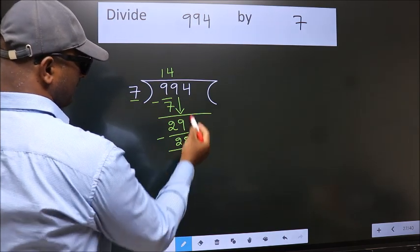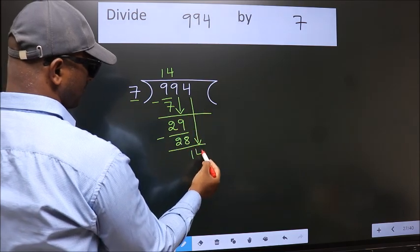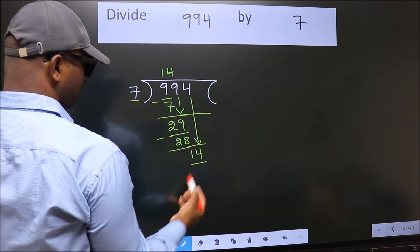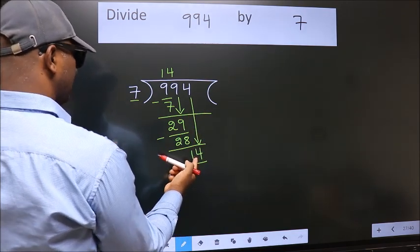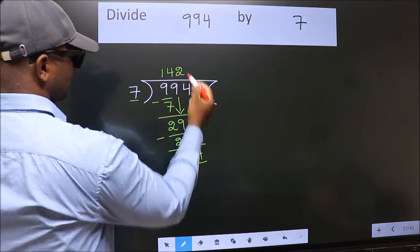After this bring down the beside number, so 4 down, so 14. When do we get 14? In 7 table, 7 twos, 14.